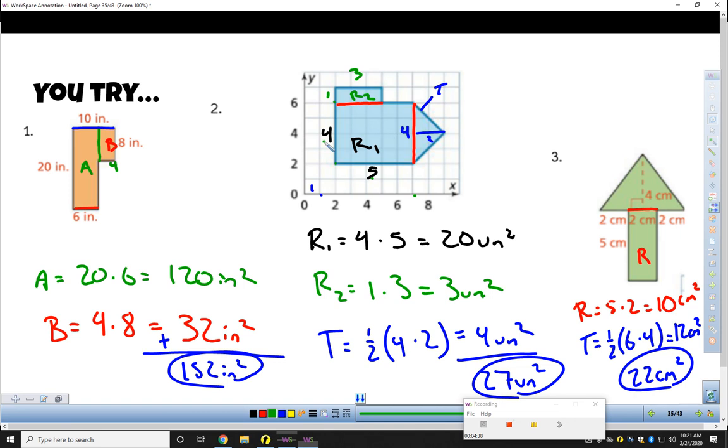In the last one, you could kind of do it two different ways. You could probably do all of these a lot of different ways. I kept this arrow as just one rectangle and one big triangle. Rectangle 5 by 2, triangle was 2, 4, 6 across the base, height of 4, total of 22 centimeters squared.